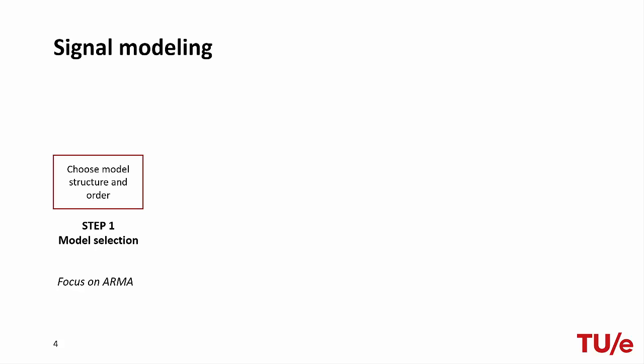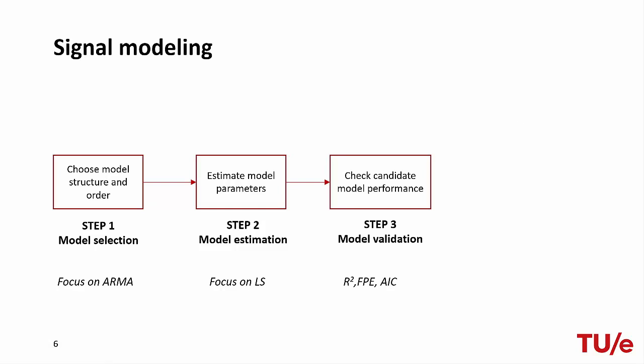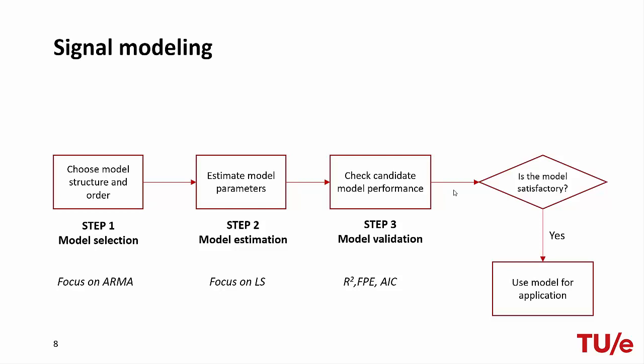First, we choose a model — the focus of this course is on ARMA models. Then we estimate the parameters of the model from the observed data using the least-squares approach. After estimating the model parameters, we need to check the model performance using an appropriate metric. In this course, we will consider the R-squared of the model fit, the final prediction error, and the AIC information criterion. After choosing a metric, we assess whether the performance is satisfactory. If so, we proceed using the model for our application — estimating the power spectrum. If not, we start over.